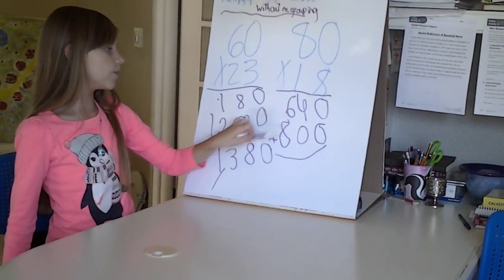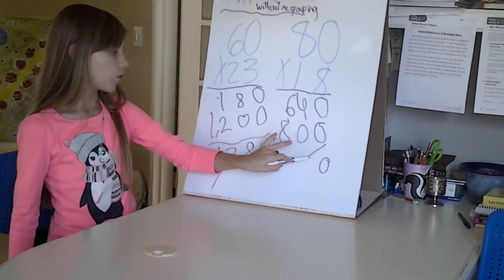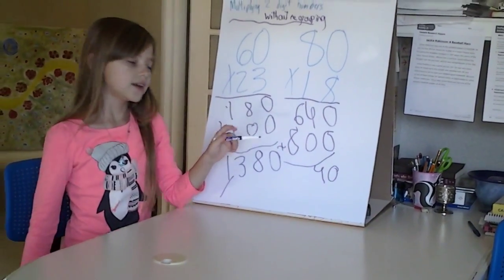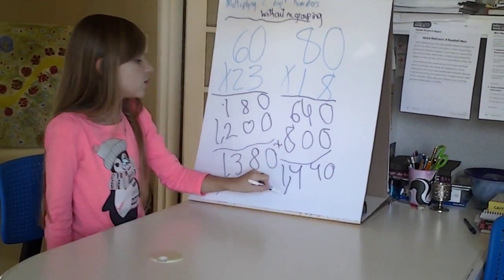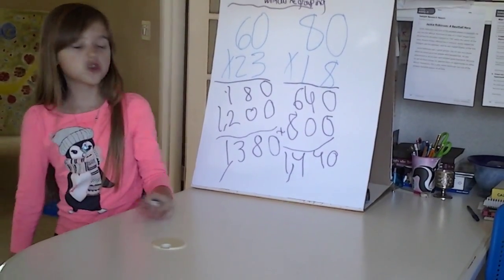add those together. So you have the 0 is here. 4 plus 0 is 4. And 6 plus 8 is 14. Then you have your answer, 1440.